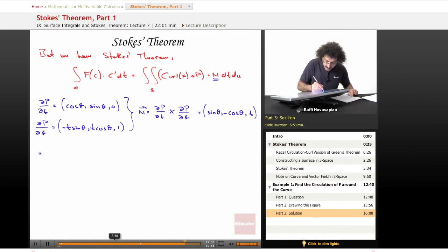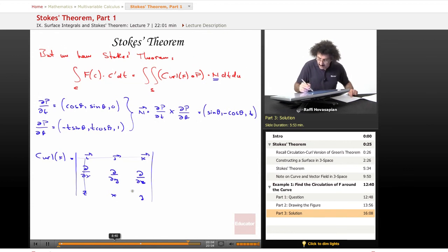Now I need curl F. I'll do this explicitly: the determinant with i, j, k in the first row, ∂/∂x, ∂/∂y, ∂/∂z in the second row, and z, x, y in the third row. When I expand along the top row, I get (1, 1, 1). So that's curl F.